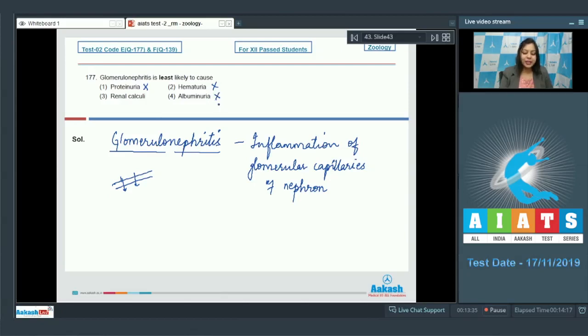Hematuria, that is the passage of blood cells, can also occur. The passage of albumin, that is plasma proteins, option number three is renal calculi. Renal calculi is renal stones which is formed by precipitation of calcium salts in the kidney. So renal calculi are least likely to occur in case of glomerulonephritis, so the answer becomes option number three.